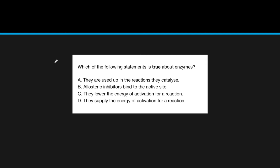Here's a question you might get about enzymes — pause and try to answer it. Which of the following statements is true about enzymes? They are used up in the reactions they catalyze — that's not true; enzymes are not like the reactants, they will always be there. Allosteric inhibitors bind to the active site — we'll put a question mark on that. They lower the activation energy — that makes sense; they align the molecules so they don't need to go at as high a speed, so they can operate at lower energy. Or they supply the energy for the activation of the reaction — they don't supply the energy, they lower the activation energy. So our answer is going to be C.